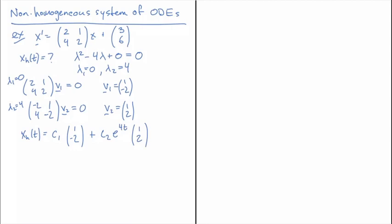Now we need to figure out what X_p(t) is, and we're going to have to guess for a particular solution. In the last example, when A was invertible, we just guessed that it was a constant solution.